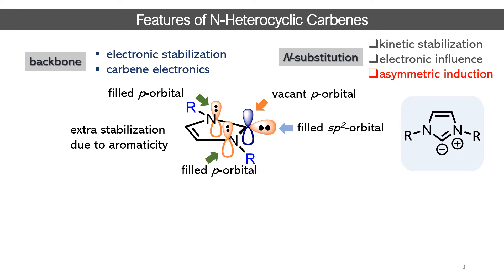The second structural feature is the nitrogen substituent. Carbene carbons are very reactive and if nothing is present in the reaction medium, the carbene can dimerize to give an olefin. Putting a bulky substituent on the nitrogen atom kinetically stabilizes the NHC and inhibits dimerization. The substituent can also electronically influence the nitrogen atom and thus indirectly stabilize or destabilize the carbene.